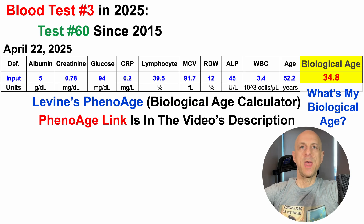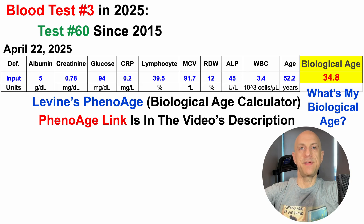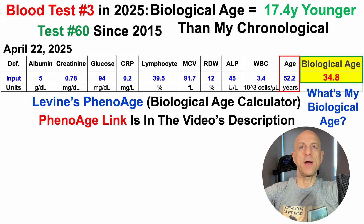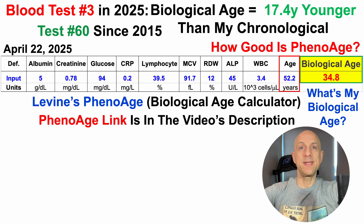If you have blood test data and you want to calculate your own biological age using this test, there's a downloadable link and a link from my blog in the video's description. So when entering these data, I get a biological age of 34.8 years, which is 17.4 years younger than my chronological age. A question I often get at this point is, how good is this biological age clock? How good is PhenoAge?